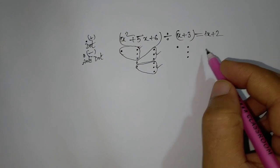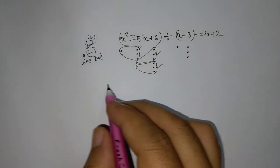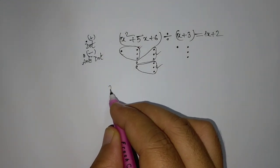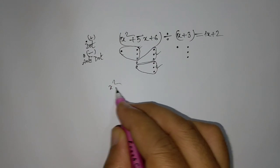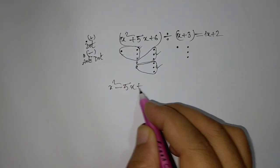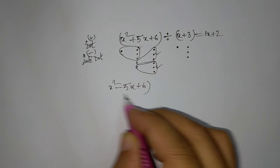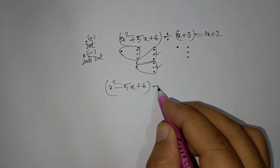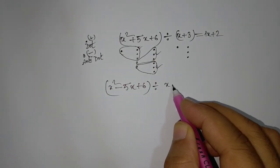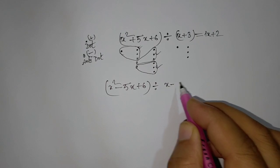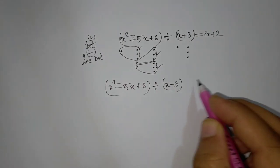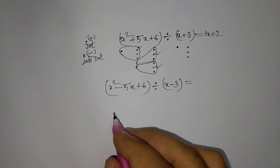Another example: x squared negative 5x positive 6, divided by x negative 3. What do we get?